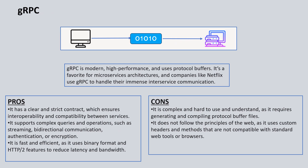The next pattern is GRPC. GRPC is a modern, high-performance protocol that uses protocol buffers. You can think of GRPC as something used for streaming applications such as Netflix. It is also a good pattern where you have immense inter-service communication requirements. The main benefit of GRPC is that it has a clear and strict contract which ensures interoperability and compatibility between services. It also supports complex queries and operations such as streaming, bi-directional communication, authentication, and encryption.